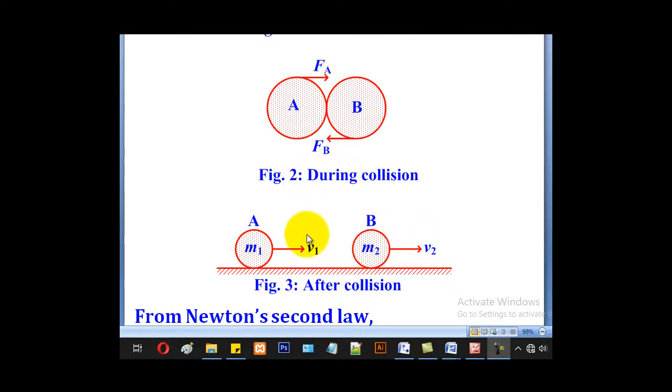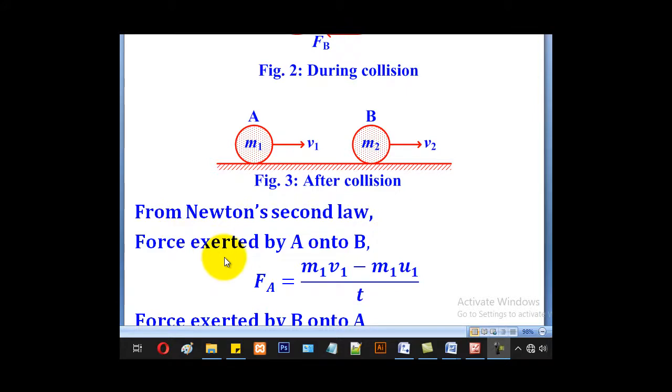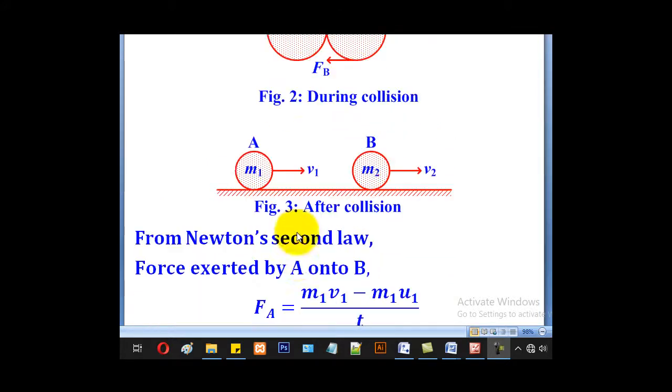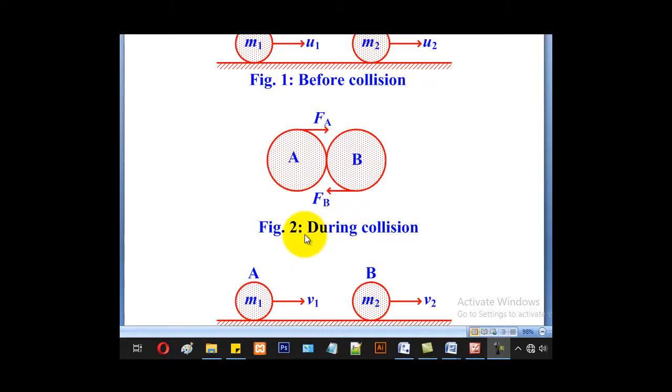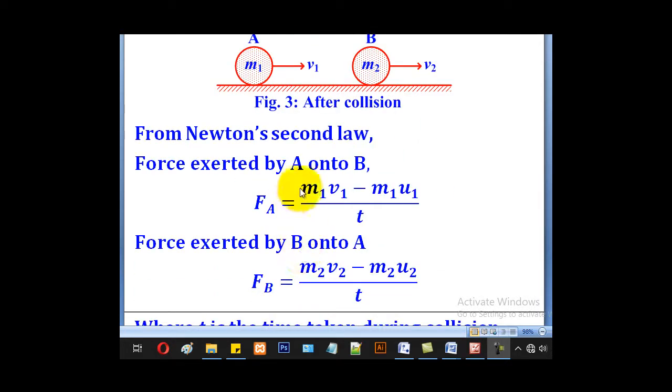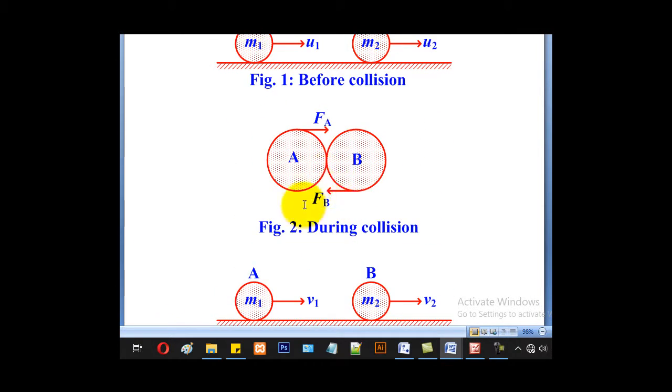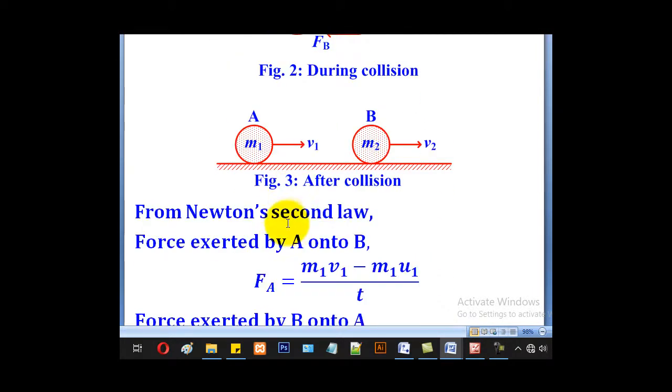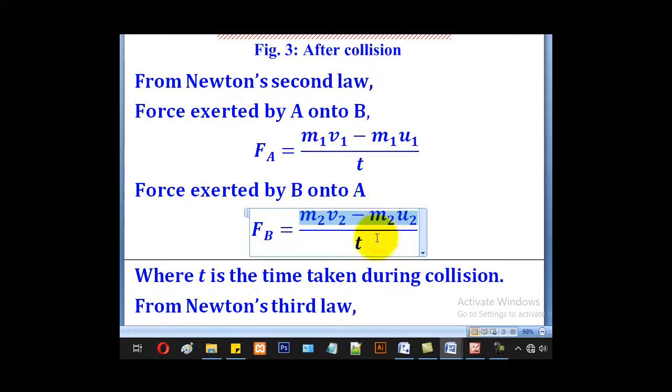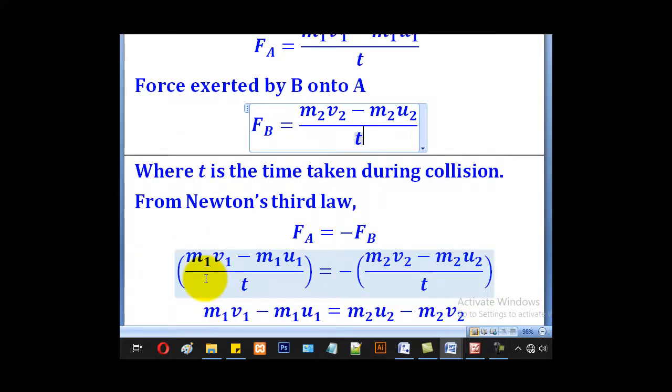so the velocities will change. From Newton's second law, the force exerted by A on B will be FA, given by the change in momentum over the time taken. Similarly, the force exerted by B on A will be given by the change in momentum over the time taken. So this T is the time taken during collision.